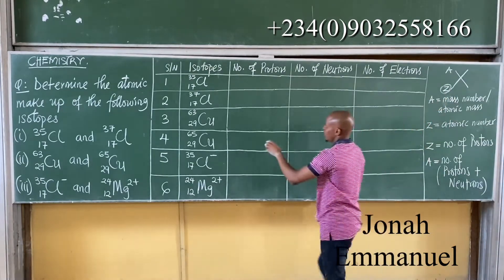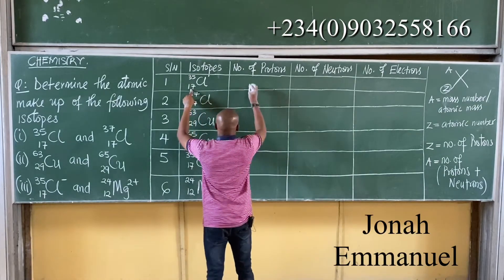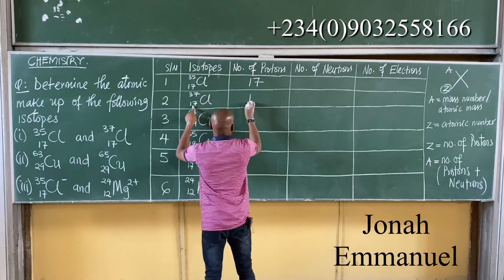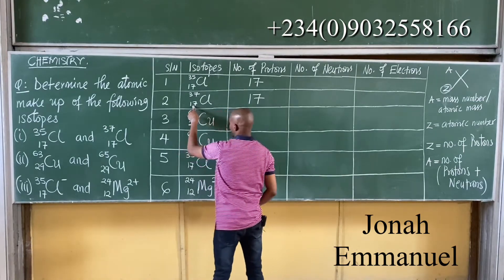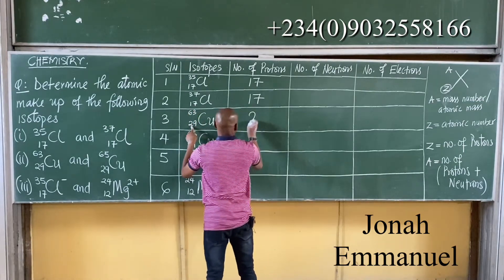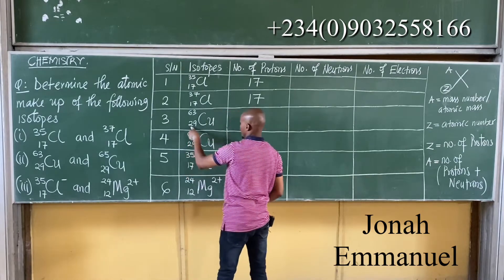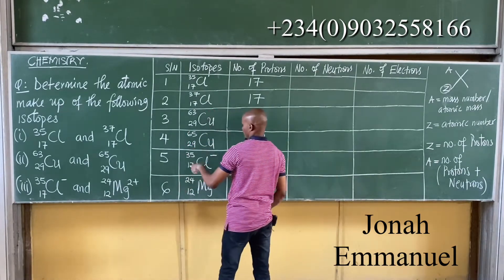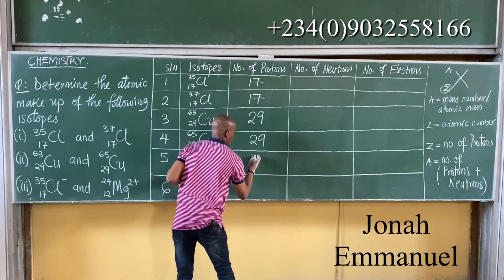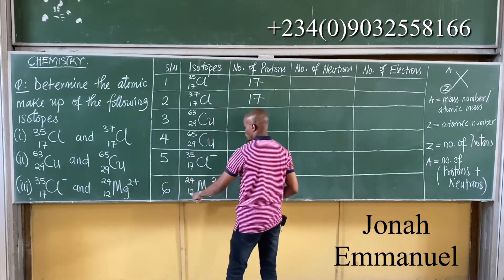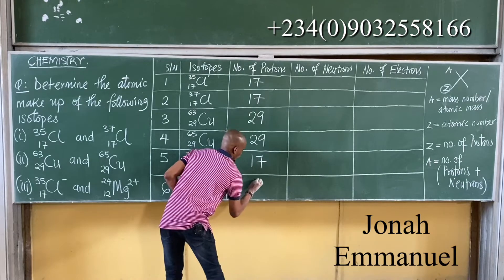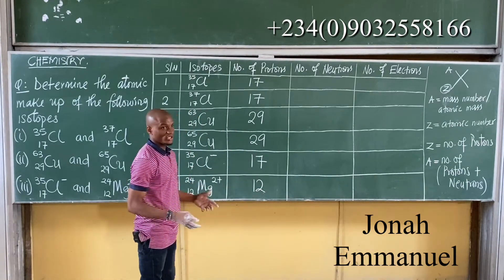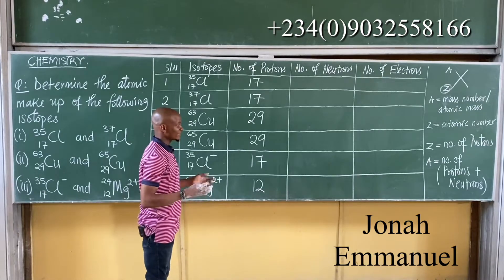So for Chlorine-35, the number of protons is 17. For Chlorine-37, the number of protons is also 17. For Copper-63, it's 29. For Copper-65, it's 29. For the Chlorine ion, it's 17. And for Magnesium ion, it's 12 — because that is the atomic number.